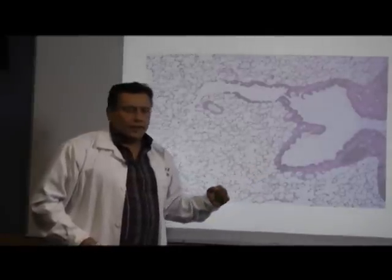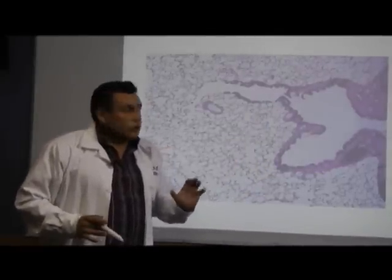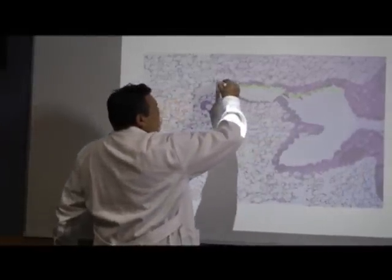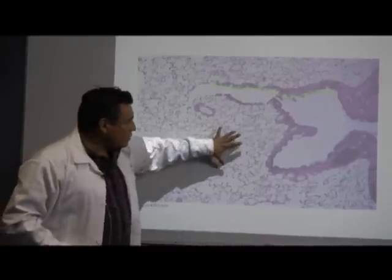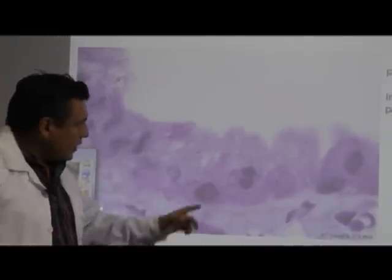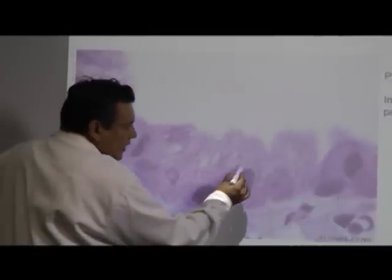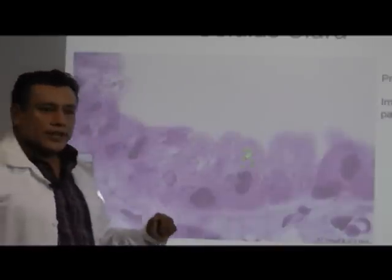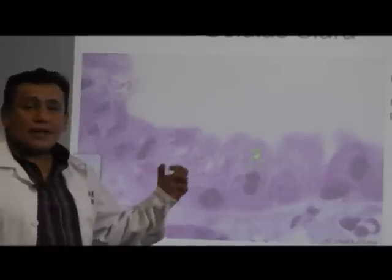Aquí estamos viendo una fotomicrografía de un bronquiolo terminal. Esta es la unión de este bronquio con un sáculo alveolar; toda esta malla celular en forma de red corresponde a las paredes alveolares, y esos espacios blancos contienen aire. Aquí es donde se da ese intercambio gaseoso. Ese bronquiolo está revestido por gran cantidad de células claras. Estas células claras carecen de cilios, intervienen mucho en la proliferación y diferenciación celular y tienen gran cantidad de gránulos proteínicos con factores y enzimas proteolíticas para evitar la invasión bacteriana.